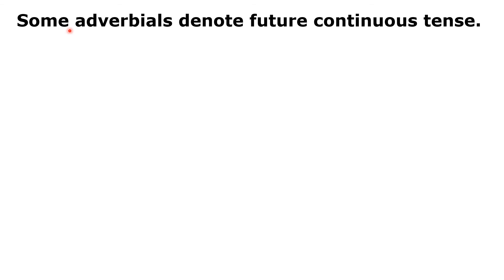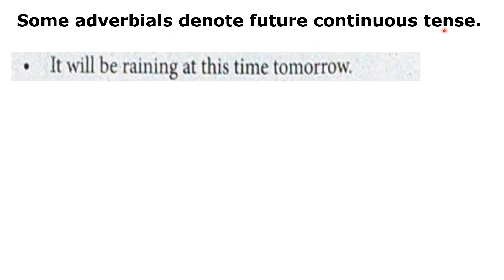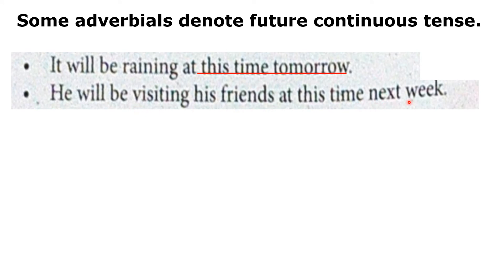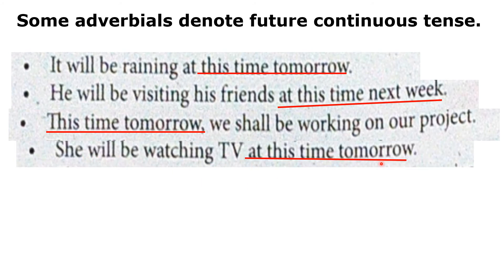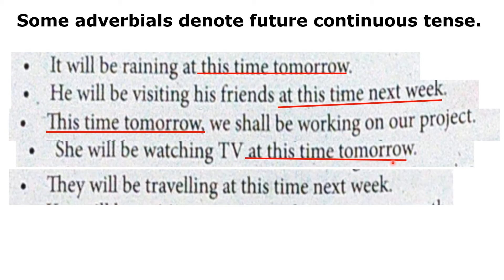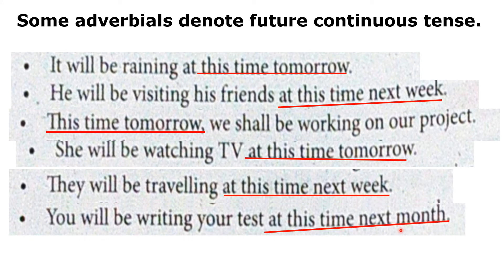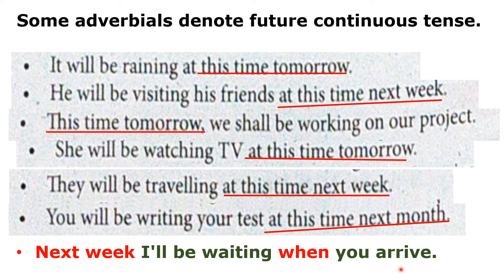More examples of future continuous tense: 'He will be visiting his friends at this time next week.' 'This time tomorrow, we shall be working on our project.' 'She will be watching TV at this time tomorrow.' 'They will be traveling at this time next week.' 'You will be writing your test at this time next month.' 'Next week, I will be waiting when you arrive.'